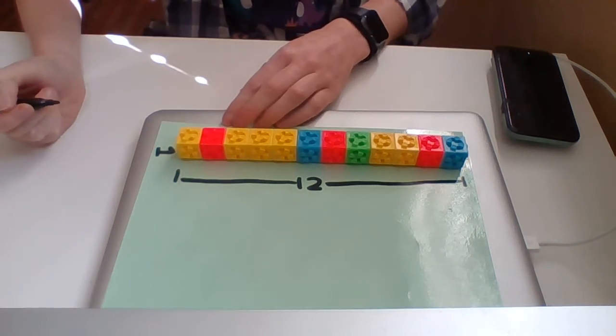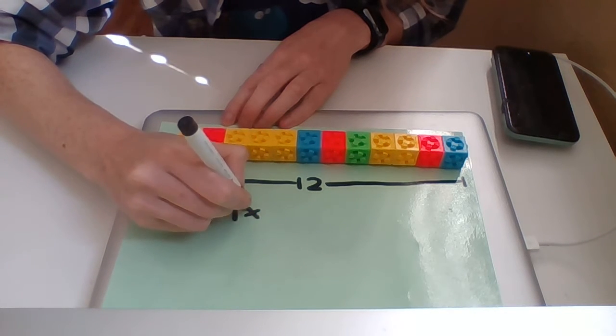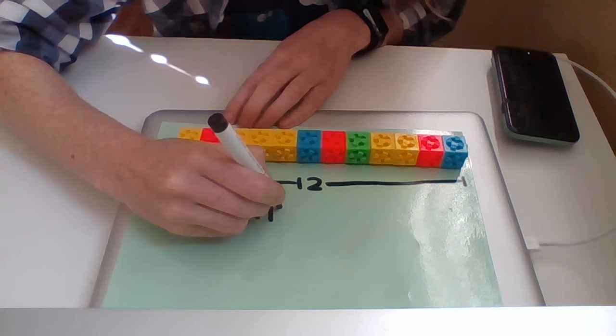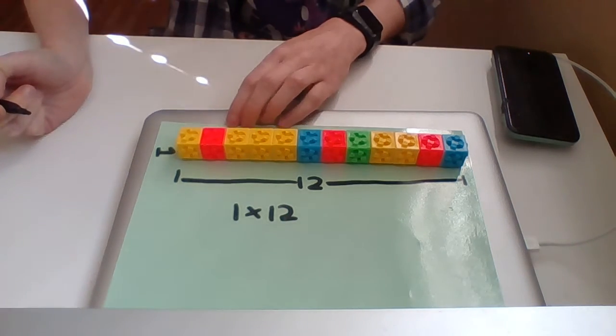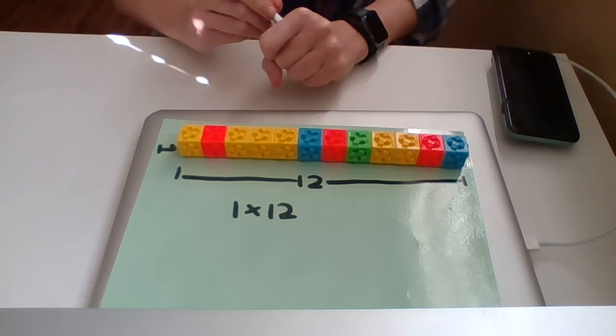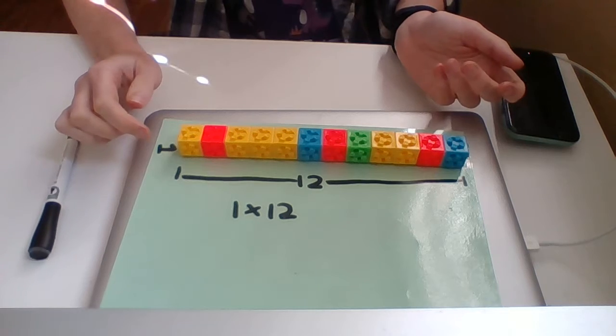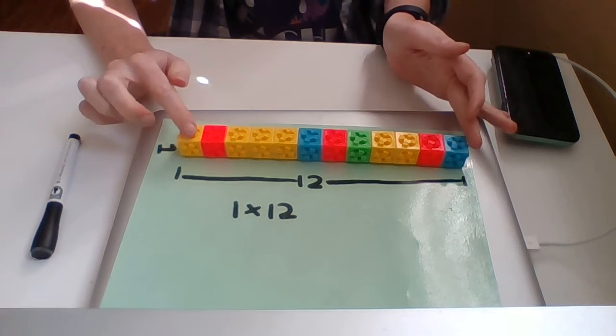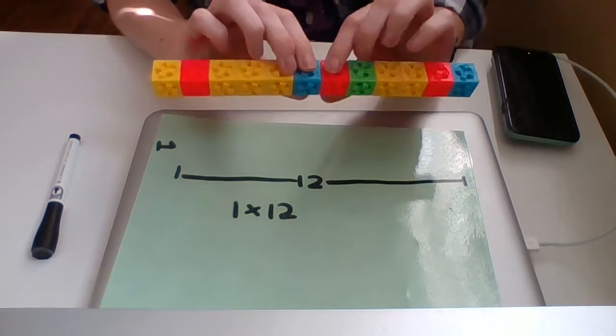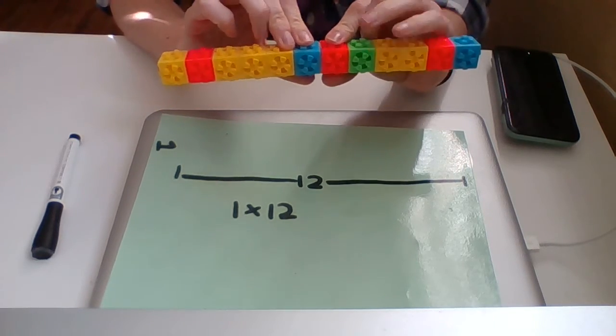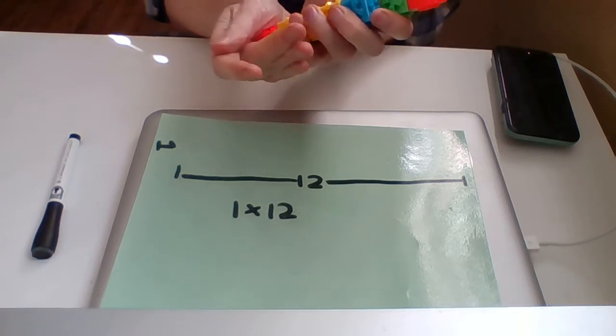So if I were to write this down, I would call this a 1 by 12. So, it is now your job to figure out what's another arrangement that I could make with these boxes, okay? How am I going to take all 12 of these and connect them together to make a new box?